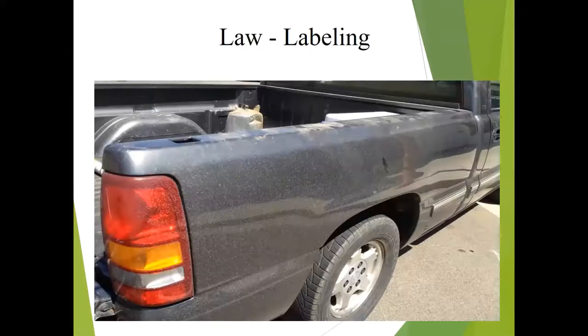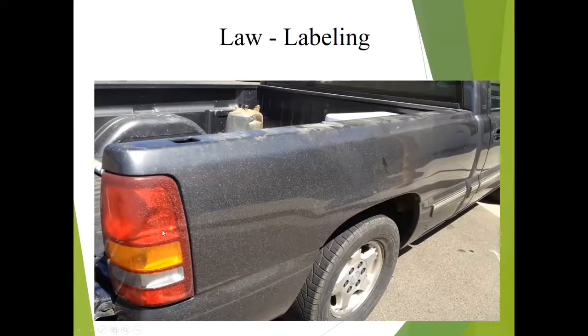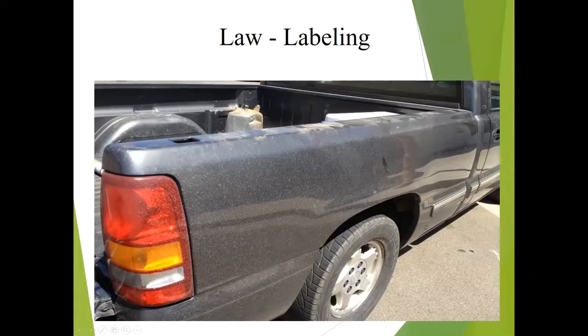Another reason for these conditions and label requirements is to avoid drifting onto people, vehicles, property, or non-target areas and other crops that could sustain damage. You'll notice on this truck there is spotting — a telltale sign this truck was misted on. If the truck was misted on, chances are that people around the truck were also misted on, which can lead to health issues. If it's proved that you made that application, there can be consequences.